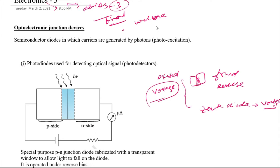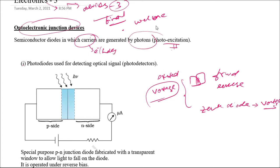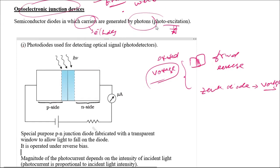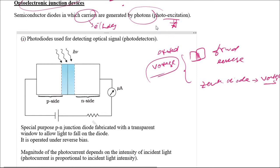Now we are moving to another category of semiconductor devices: optoelectronic junction devices. In these devices, the carriers — that is, electrons and holes — are generated by photons. This process is known as photo excitation.